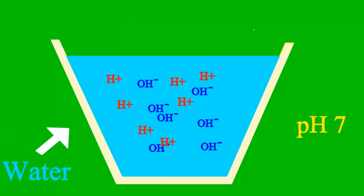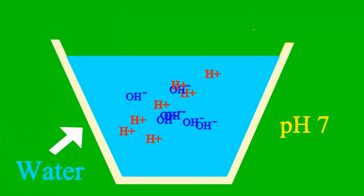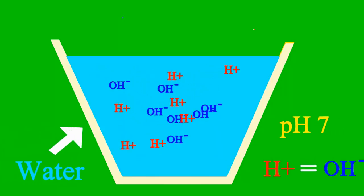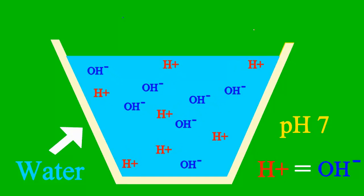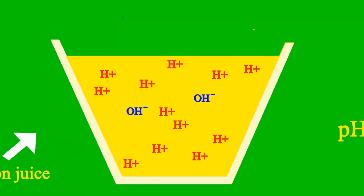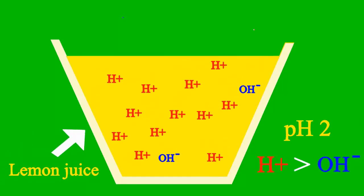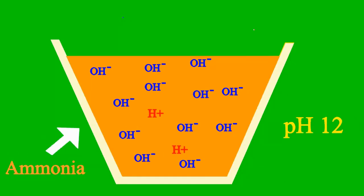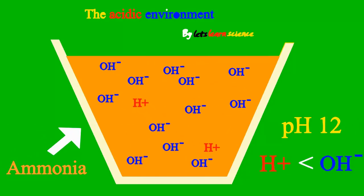When the pH is 7, it's a case where the sample is neither an acid nor a base. But less than 7, it's an acid. More than 7, it's a base all the way.